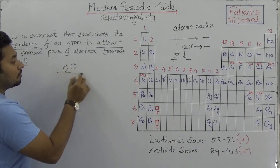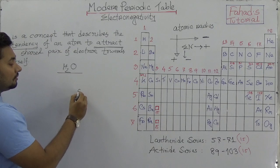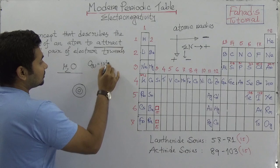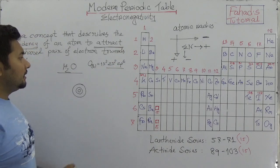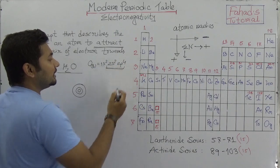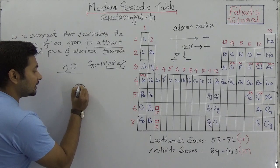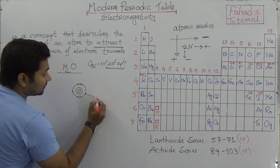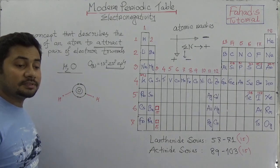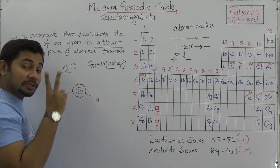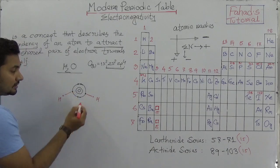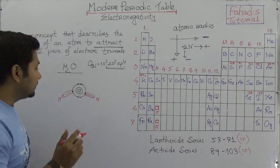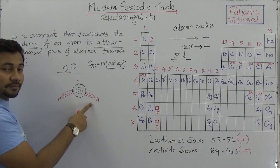Consider the water molecule, which is a very common example. Oxygen has six electrons in its outer shell — its configuration is 1s2, 2s2, 2p4. Among those six electrons, some are shared with hydrogen. Suppose we have two hydrogen atoms attached to oxygen. When it forms a water molecule, two shared electron pairs form. Those shared electrons should be positioned between the oxygen and hydrogen atoms.